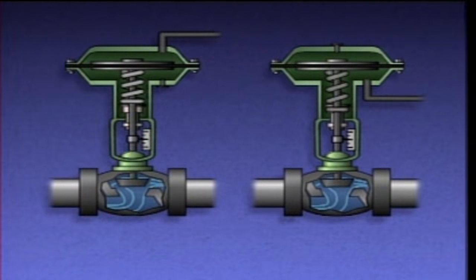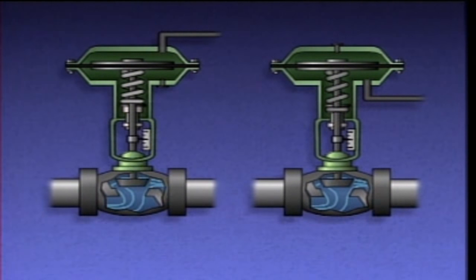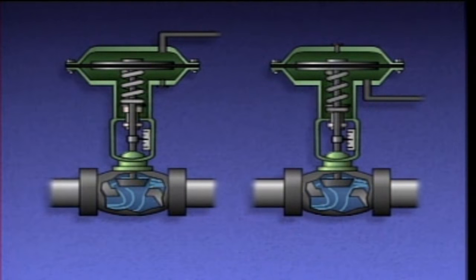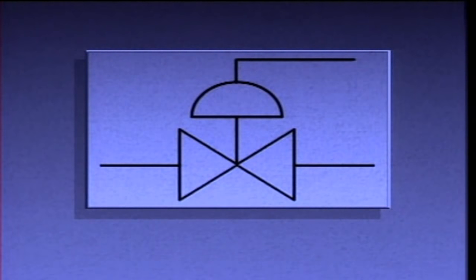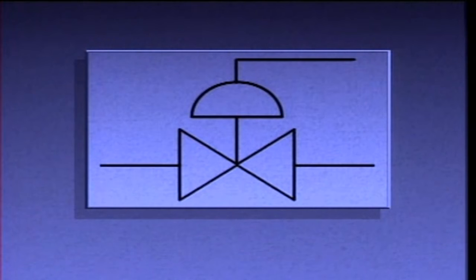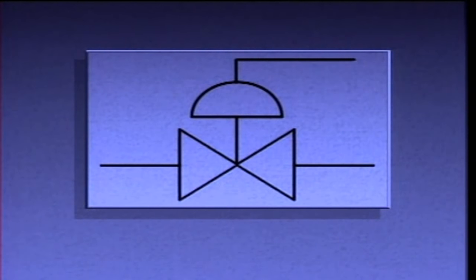By controlling the applied pressure, either of these actuators can be used to position a valve anywhere within the limits of travel. Regardless of how they operate, single-acting diaphragm actuators are usually represented on process piping diagrams by a standard symbol.